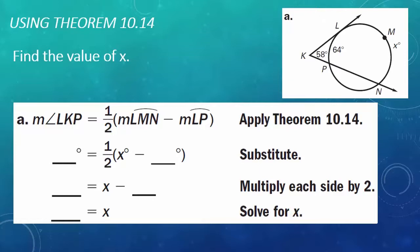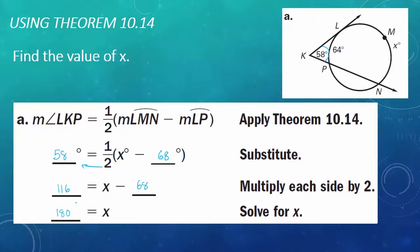Example 3, Part A: Find the value of X using Theorem 10.14. A tangent and a secant intersect outside the circle. The measure of angle LKP equals one-half (arc LMN minus arc LP). The angle LKP is 58 degrees and arc LP is 68 degrees. Multiplying both sides by 2: 116 equals X minus 68. Adding 68 to both sides: 116 plus 68 equals 184 — wait, the notes give 180 — so the measure of X is 180 degrees.